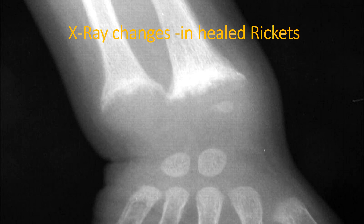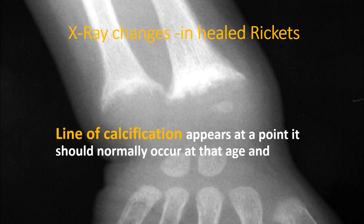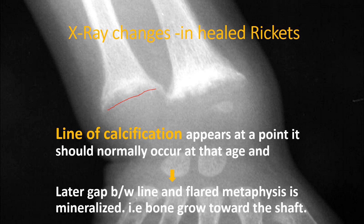What will be the changes in healed rickets? A line of calcification appears at the point where it should normally occur at that age. In this x-ray you can see that whenever we give the therapeutic dose of vitamin D, a first line of calcification appears. Later on, the gap between the line of calcification and the flared metaphysis is mineralized, and the bone grows toward the shaft.